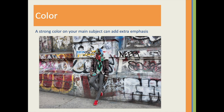A strong color on your main subject can add extra emphasis, while a strong color in an insignificant element can ruin the balance of a photograph. For example, red is a very strong color — our subject is wearing red sneakers, which is fine. But imagine a huge red trash can on the left-hand side; our eyes will automatically go there instead of to our subject. Strong colors do a better job catching attention at first, but muted colors can be just as interesting and create just as much mood. You have to be really careful with red — it's a very strong color.